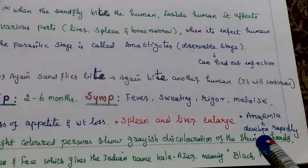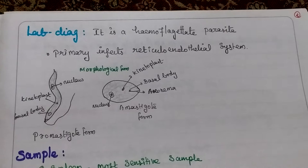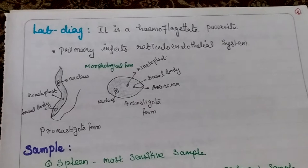For laboratory diagnosis: it is a homo-flagellate parasite that primarily infects the reticuloendothelial system. It has various forms — promastigote form and amastigote form.